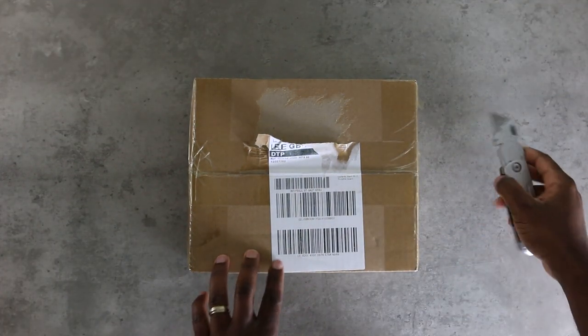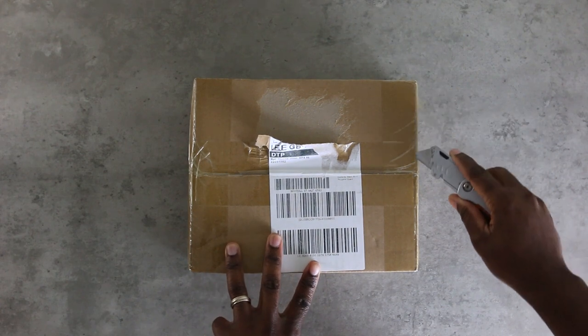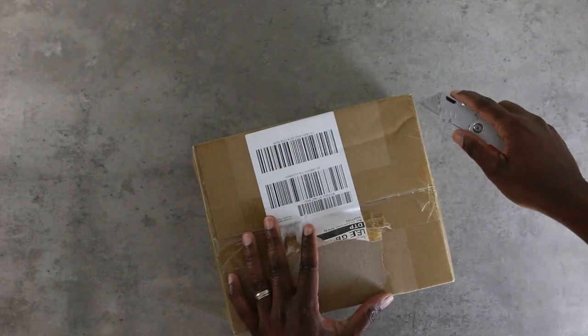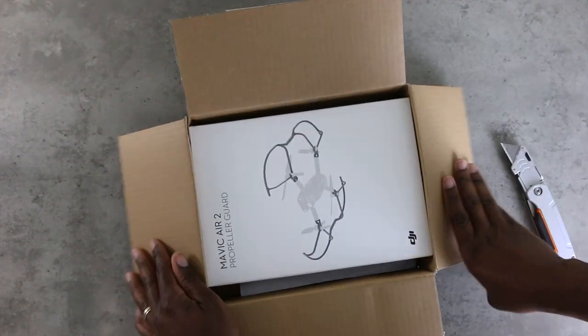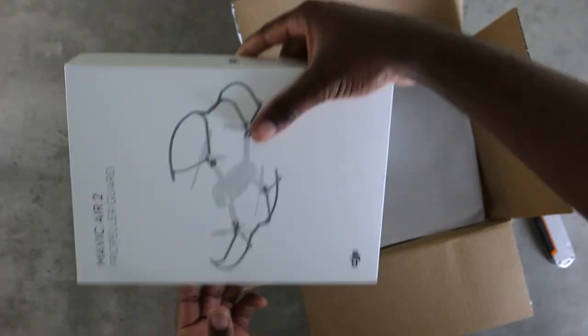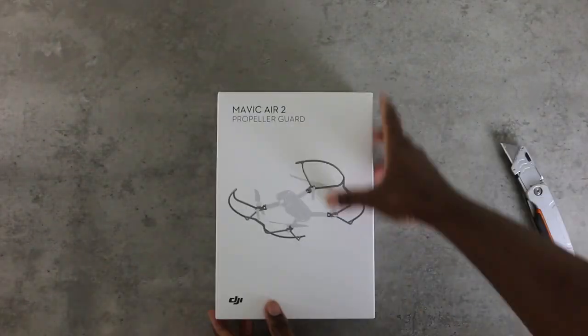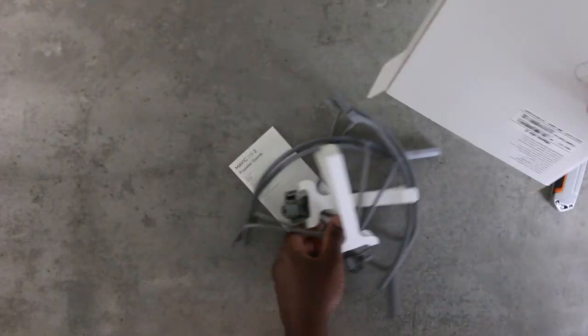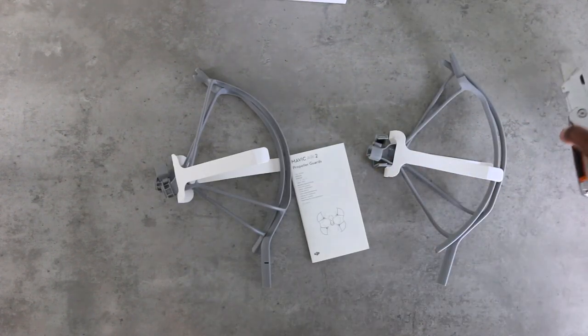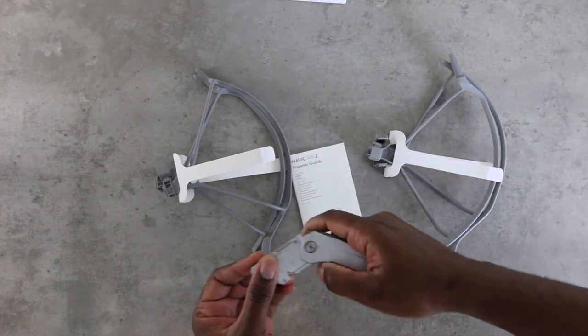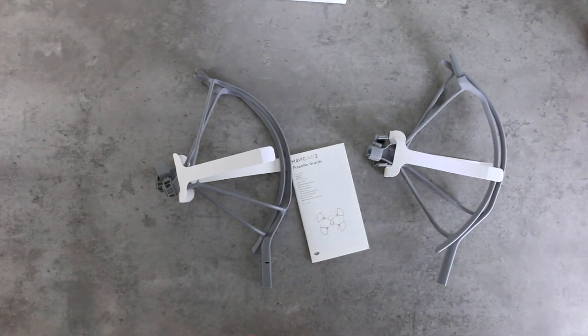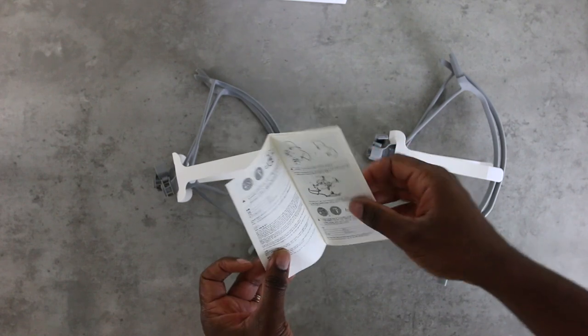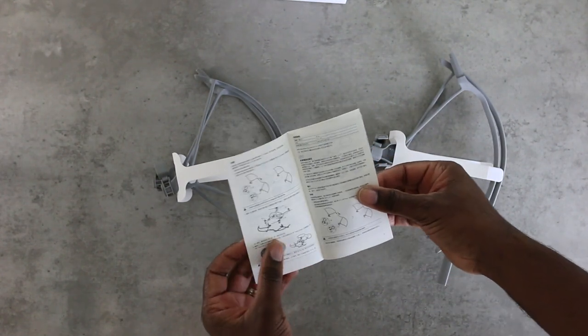Okay guys, here's the package. I'm just going to tear it open quickly. Let me just unfold my knife for safety reasons and inside you've got the Mavic Air propeller guard's guide. It's quite comprehensive actually, just for prop guards.